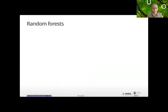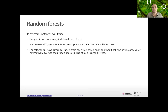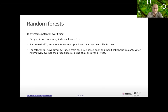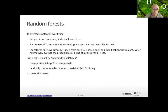Random forests overcome potential overfitting in trees. The idea is to get predictions from many individual shorter trees that don't overfit individually, then average them for a numerical outcome or take a majority vote for categorical outcomes. The 'random' in random forest comes from two things: using bootstrap resampling techniques to resample from the data, and randomly choosing a smaller set of variables for fitting each tree — so different trees use different variables.